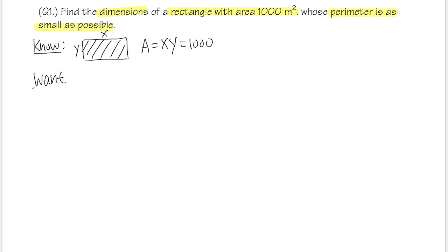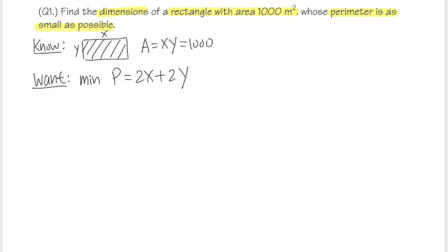The second powerful word is 'Want' — what do we want to know? We want the perimeter to be as small as possible, so we want the minimum of the perimeter. Looking at the picture, the perimeter means going around the rectangle: we have 2x plus 2y. To find the minimum or maximum of a function, we take the derivative, set it equal to zero, find critical numbers, and then check if they give a minimum or maximum.